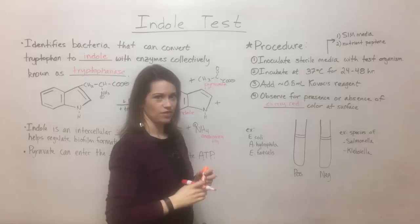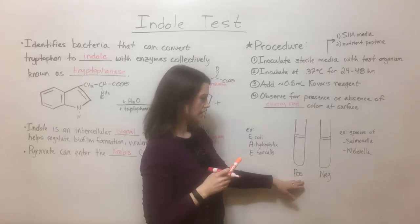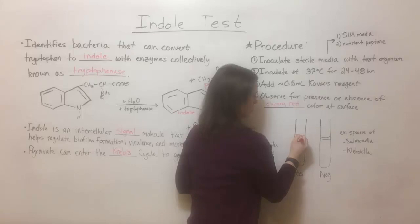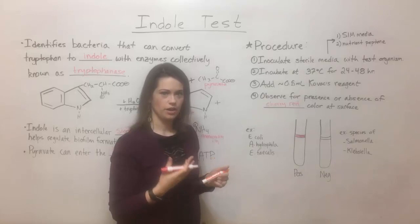So if you've got two tubes and this one was inoculated with an indole positive bacterial culture, then the surface solution will get a bright cherry red color.